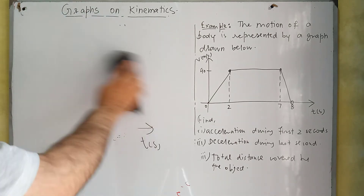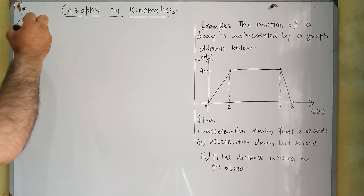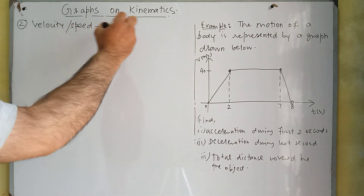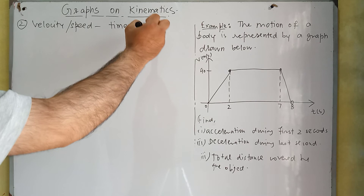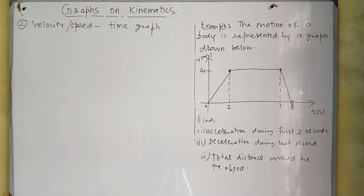After this we have a second type of graph, which is the speed-time graph — we can also call it the velocity-time graph. Before starting this graph, we need to introduce a term: acceleration. Acceleration is basically equal to the rate of change of velocity. If the velocity of a body is changing, we say that the body is accelerating, and there is a formula for acceleration.